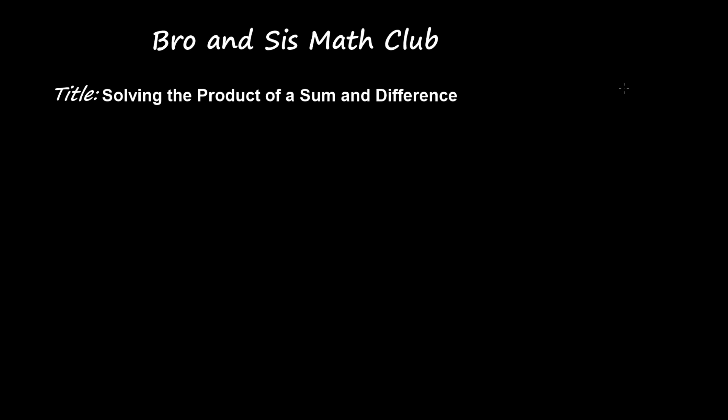So what I mean by the product of a sum and difference is that let's say we have a plus b, and now we're going to multiply it by a minus b. So first we have a plus b and that will be considered as the sum, and then we have a minus b and that will be considered as a difference, and you're multiplying them to find the product. So that's what we call the product of a sum and difference.